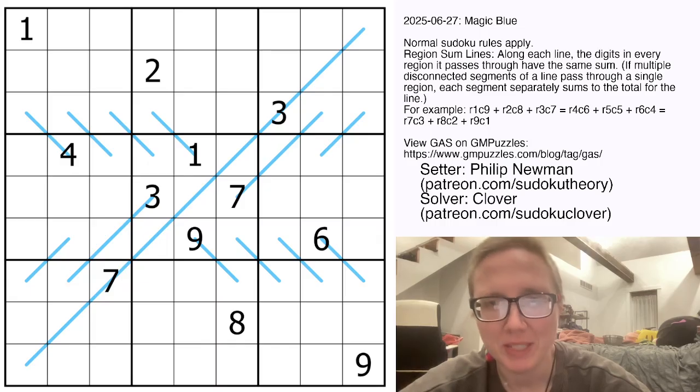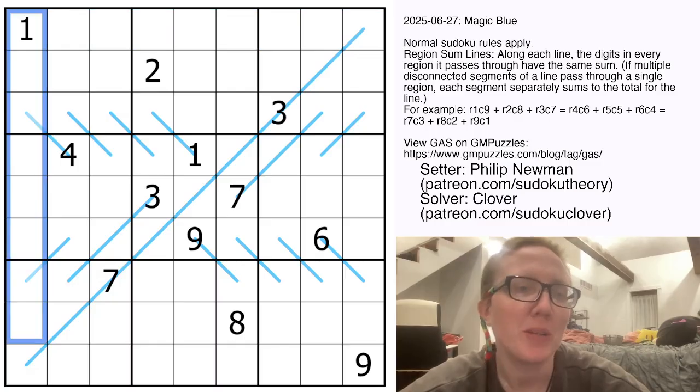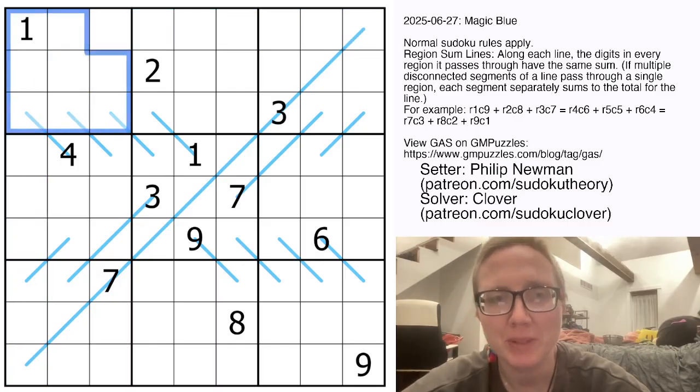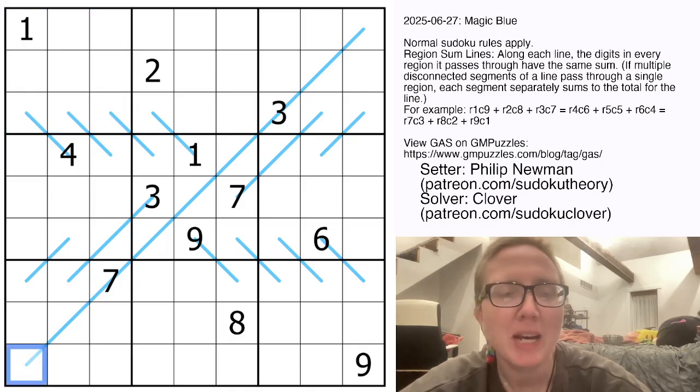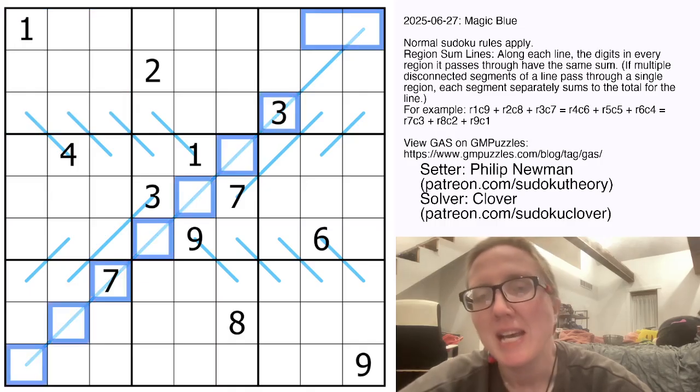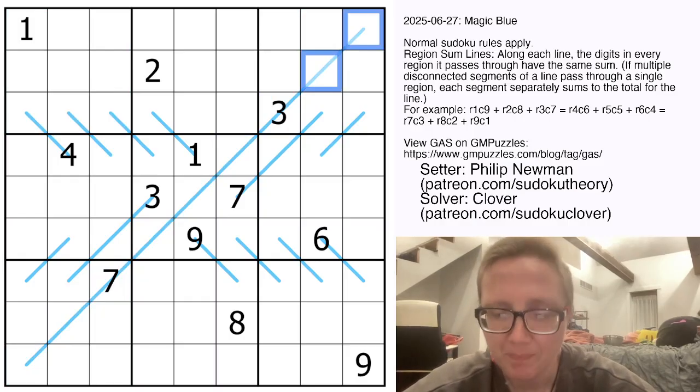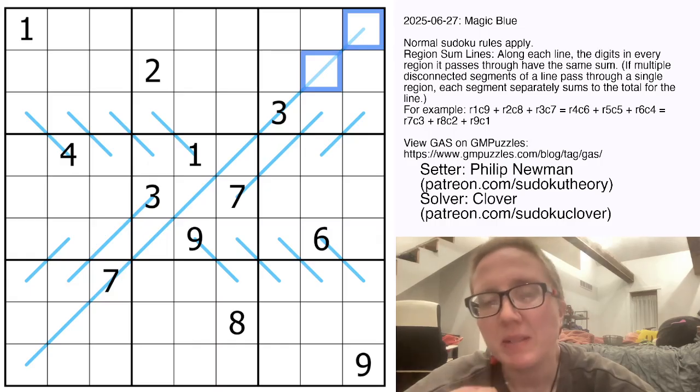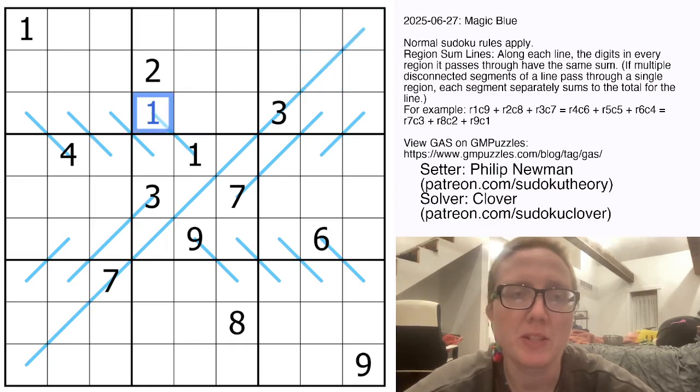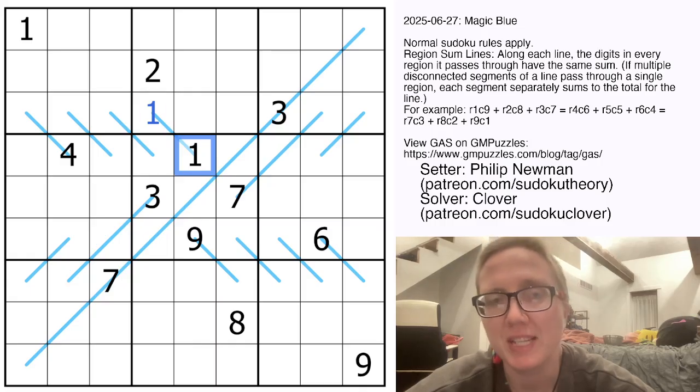This is a region sum line Sudoku. So we're placing the digits 1 through 9 once each in each row, each column, and each outlined region. And we also have some blue region sum lines in the grid. Each of these lines passes through at least two different regions in the grid, and the sum of the digits on the line has to be equal within each region it passes through. So for example, this is just going to be a 1 because it only touches one cell in each of the two regions it passes through. So the sum here is a 1, and then the sum here is a 1.